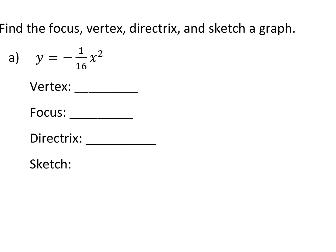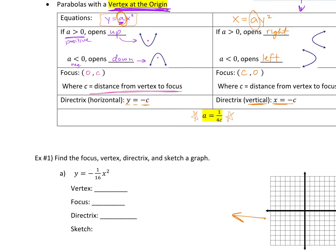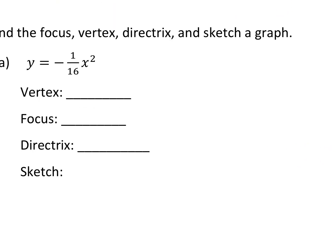You have this equation: y equals negative one-sixteenth x squared. The first thing I want you to ask yourself is where is my vertex going to be? If there's nothing going on — it's just that ax squared format — your vertex is always at (0, 0). So when it looks like this with nothing else but the a value in there, your vertex is going to be (0, 0).